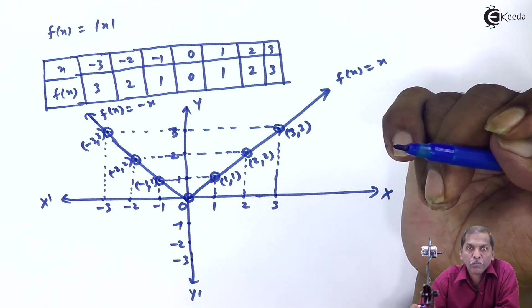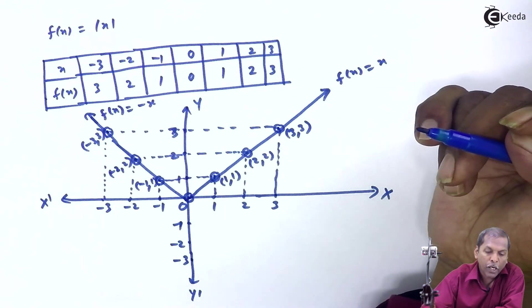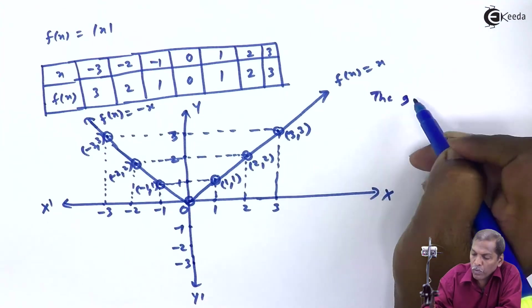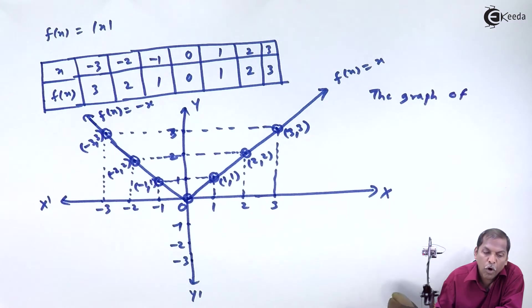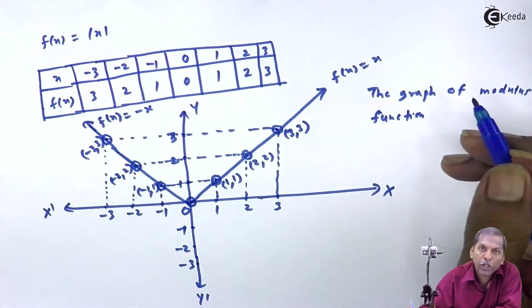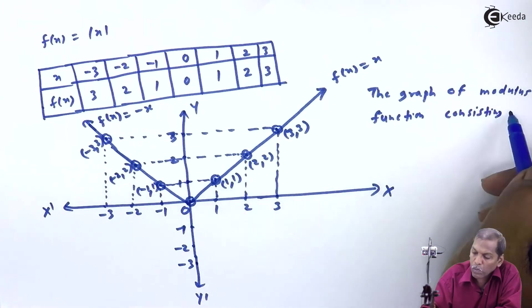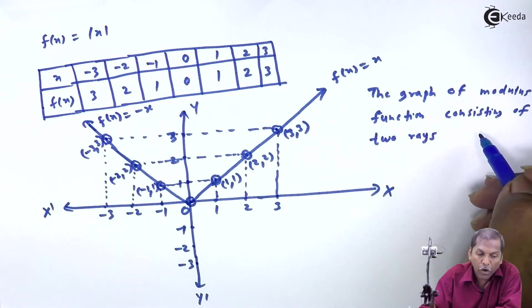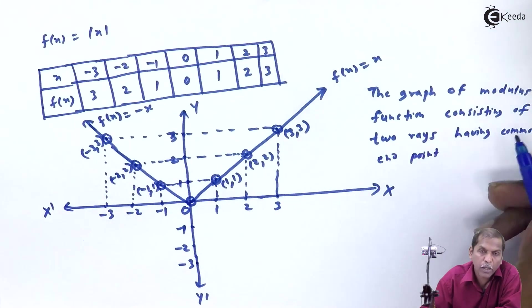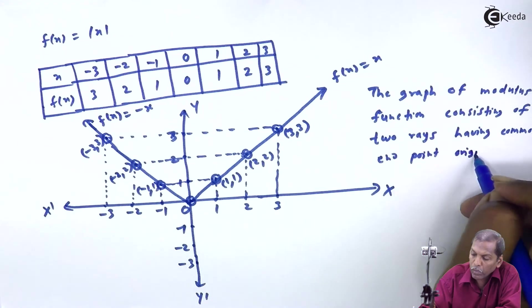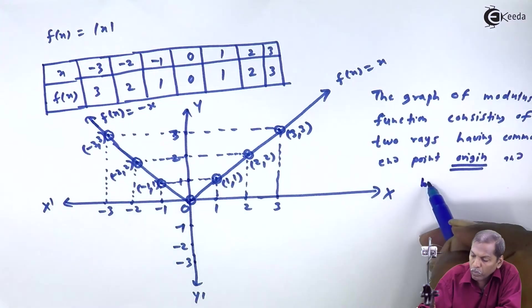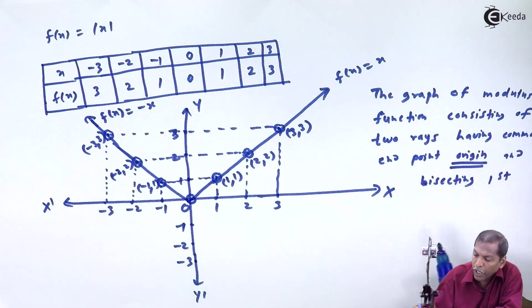So this is our modulus function graph. If we observe here, the graph of the modulus function consists of two rays having a common endpoint at the origin and bisecting the first and second quadrants.